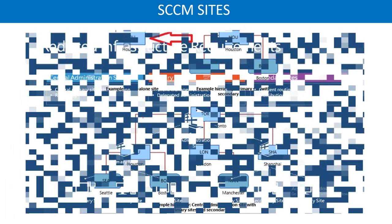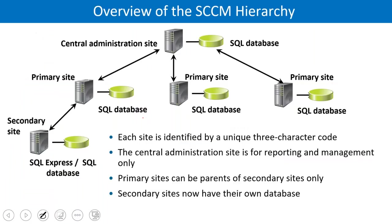Every site — whether secondary, primary, or central — has a database. Replication always flows from downward to upward: secondary sends data to primary, and primary sends data to central.